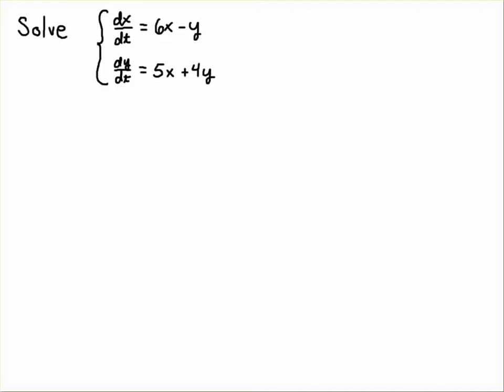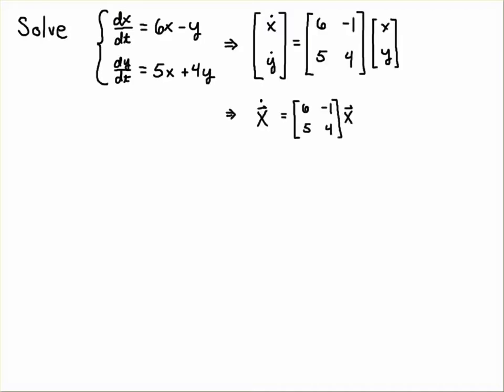So I'm going to go through that part of the video rather quickly. All right, so we rewrite this system as a matrix equation and I'm using the dot to signify the derivative with respect to time. So x dot is the same as dx/dt and y dot is the same as dy/dt. I pick off the coefficients here: 6, -1, 5, 4, and we have x, y.